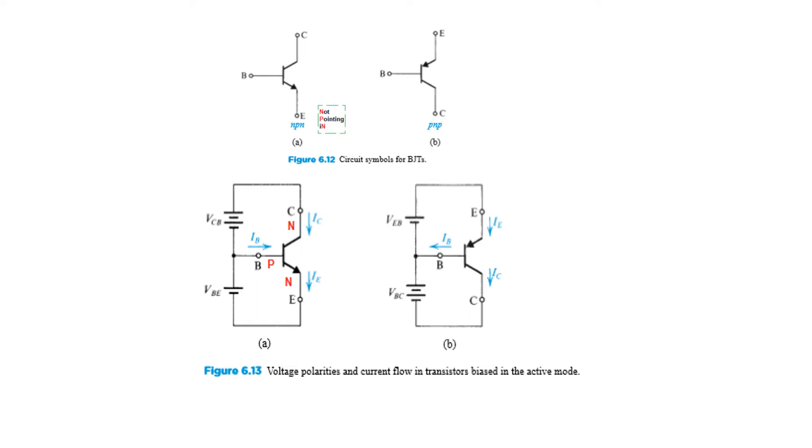The transistors are operated in three modes: cutoff mode, active mode, and saturation mode. Active mode is defined when the base emitter is forward bias, so positive terminal connected to P and negative to N. But the base collector junction is reverse bias. In this case, the circuit will be in active mode.